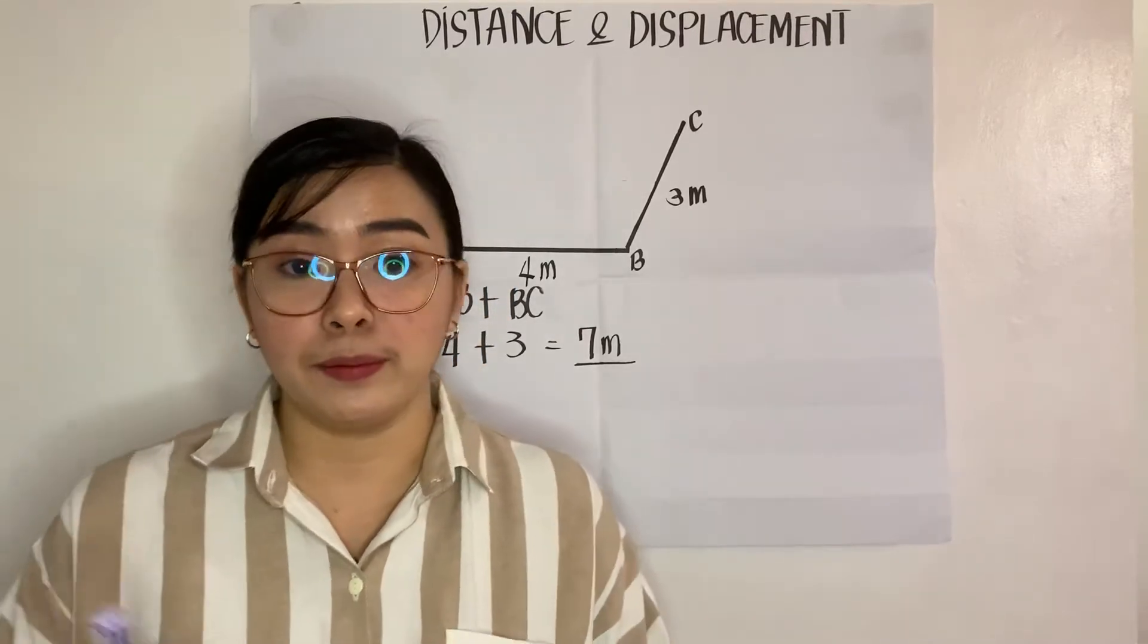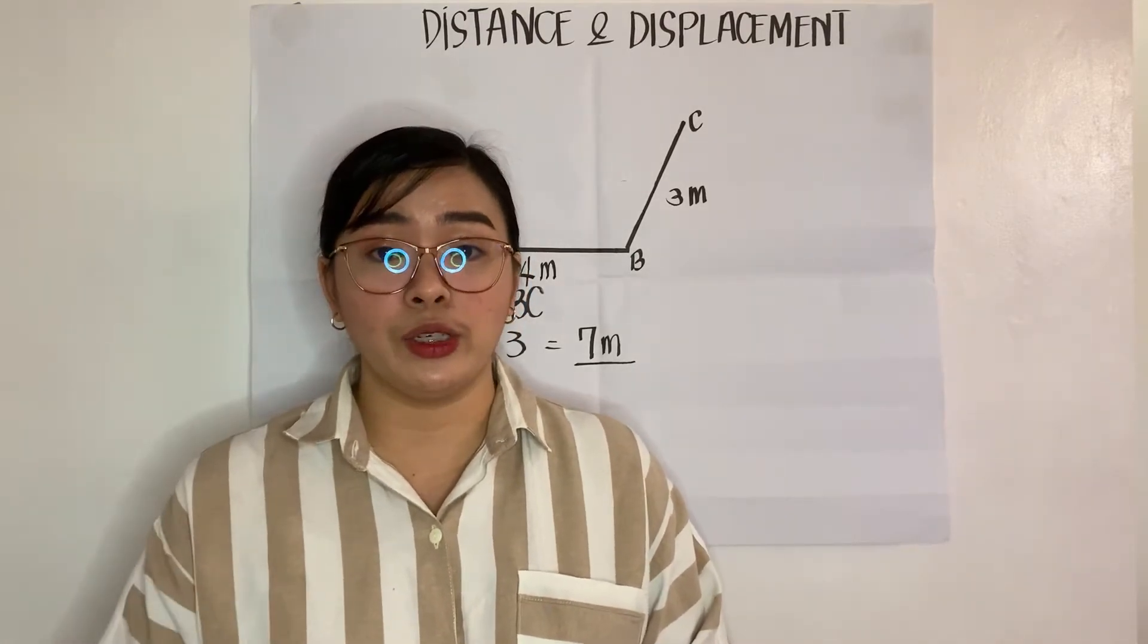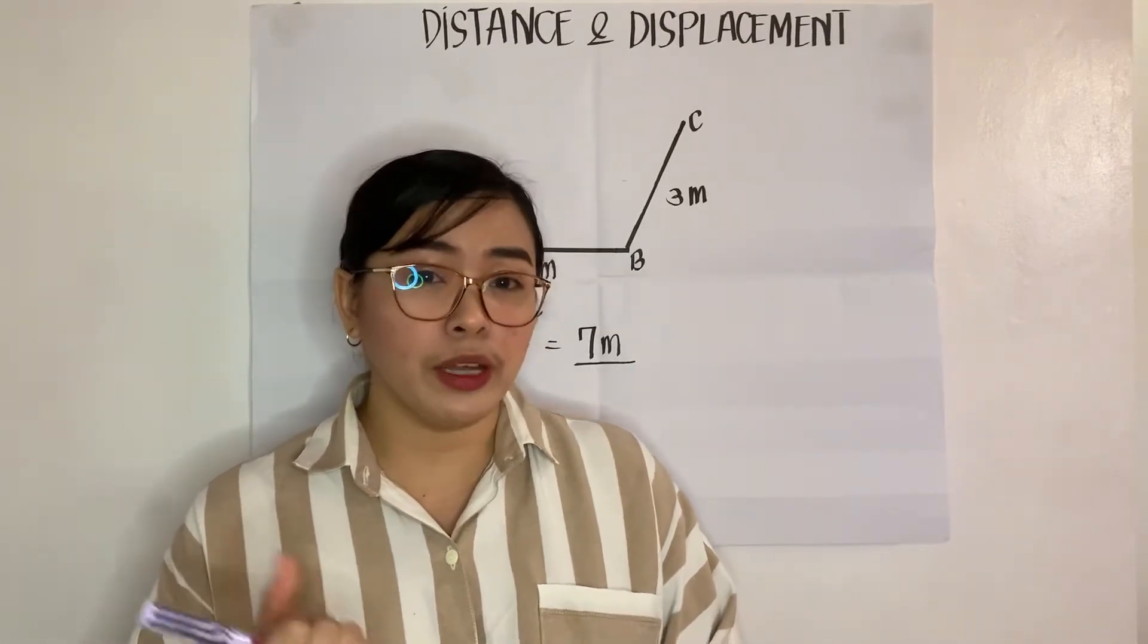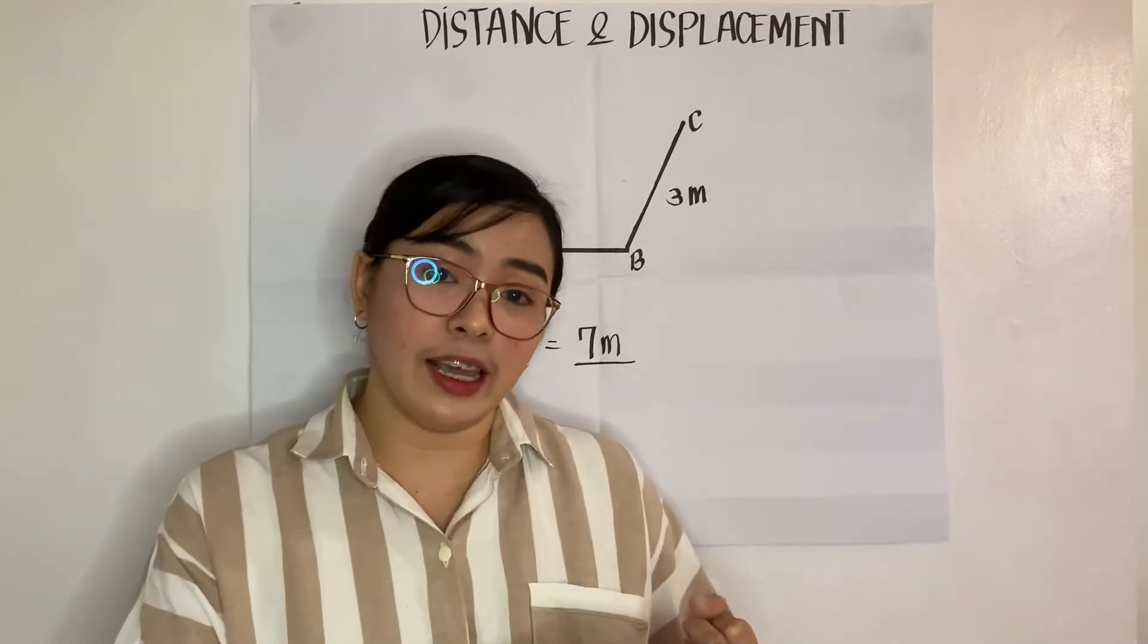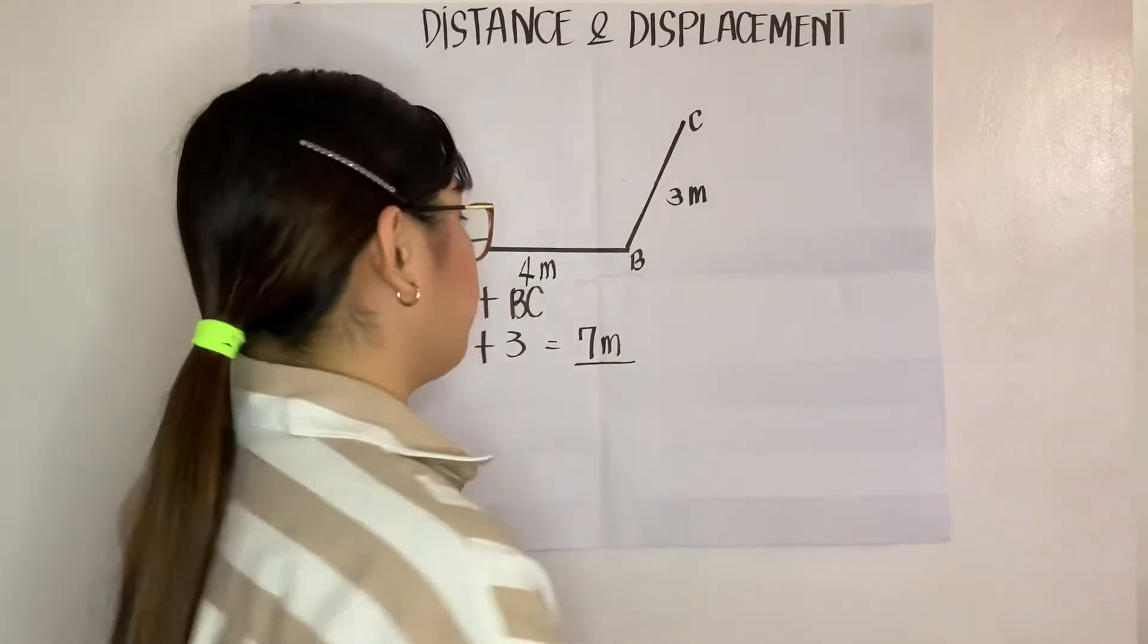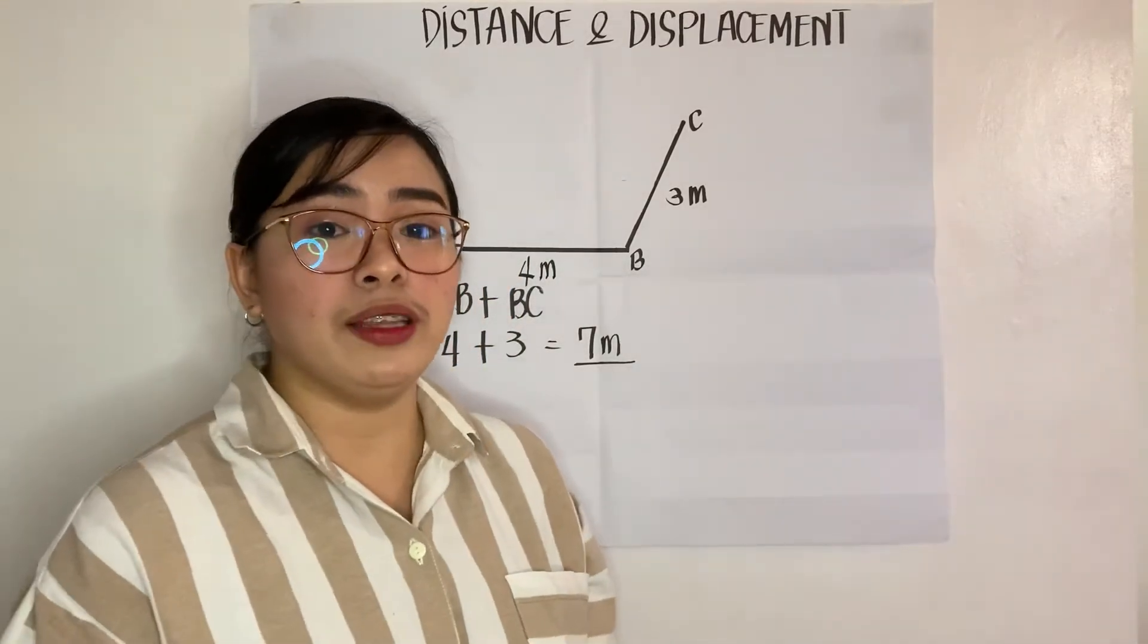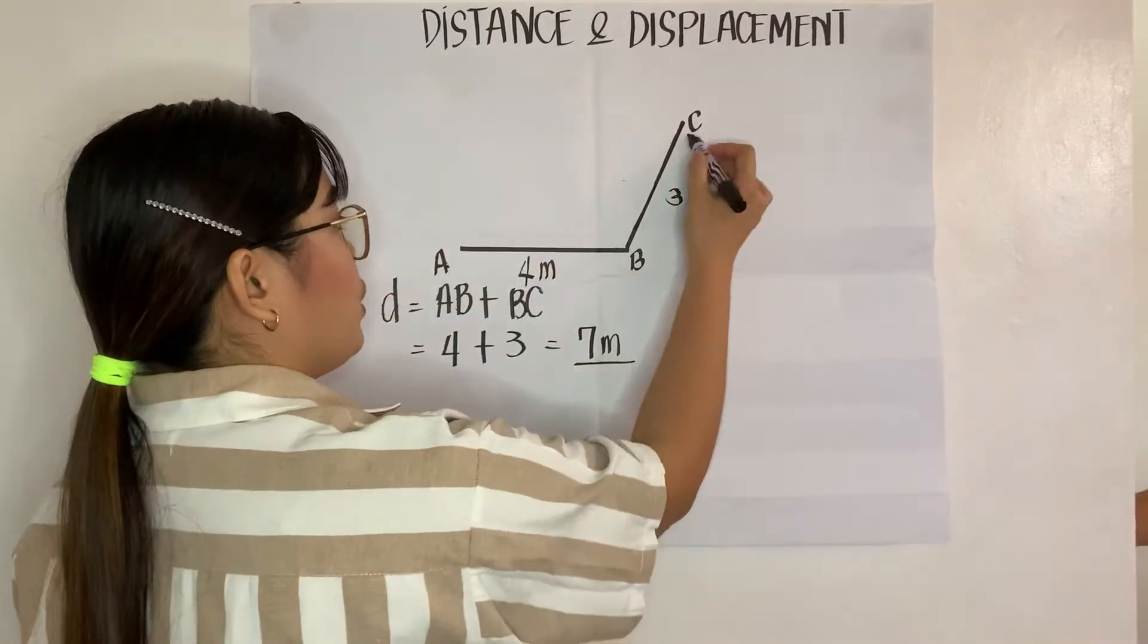What is a vector quantity? Vector quantity have a magnitude and direction. Example for vector quantity are weight, velocity, acceleration, and pressure, so on and so forth. We say that displacement is the shortest distance between point A to point C.